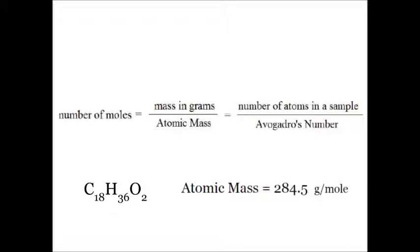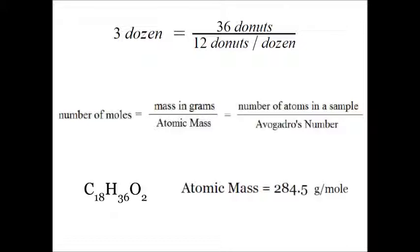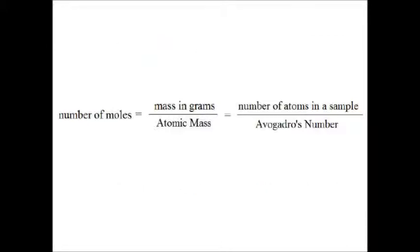It's really not that complicated. Just think about donuts. If you have 36 donuts and there are 12 donuts in a dozen, you have 3 dozen donuts. We just needed that magic number — 12 donuts per dozen. So tell us, Avogadro, your magic number: the number of molecules in a mole.